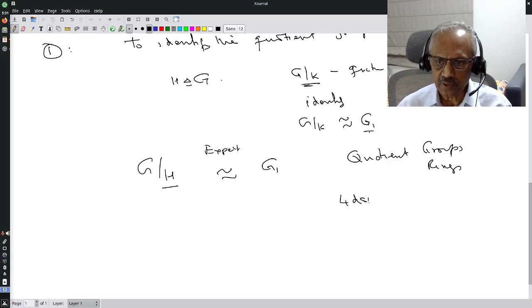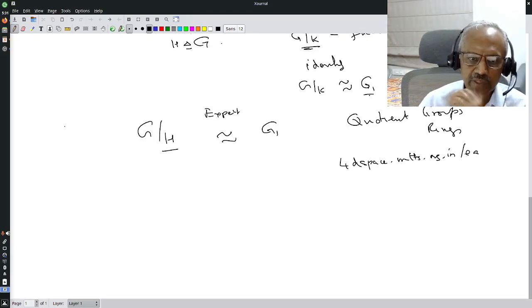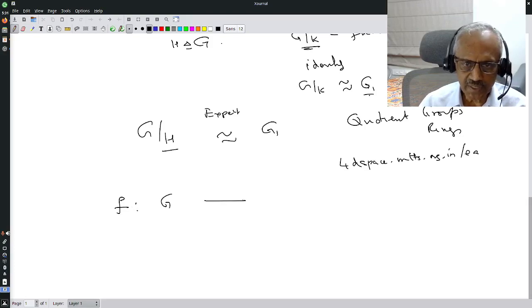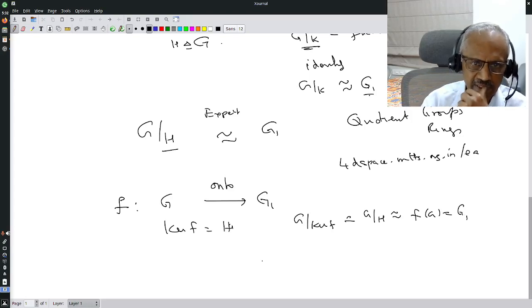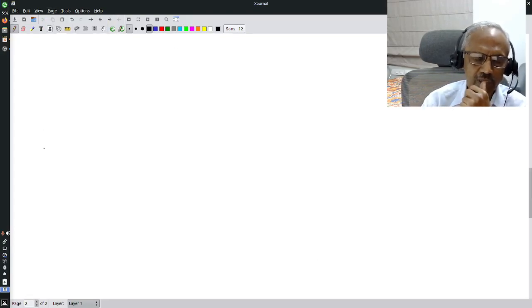They are available in visual4d.space.mtts.org.in. Look for the quotient. For some intuitive reasons I think G mod H is isomorphic to G₁, but I want to prove it rigorously. How do I do that? I have to find a group homomorphism from G to G₁ which is onto and say that kernel of F is H. Then the first fundamental theorem says G mod kernel of F, that is G mod H, is isomorphic to F of G, but that is G₁. So we proved it.